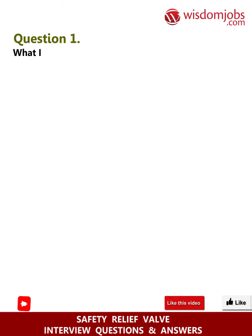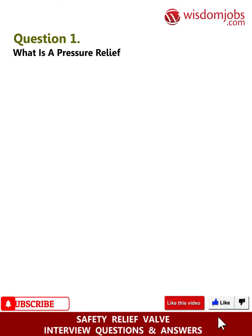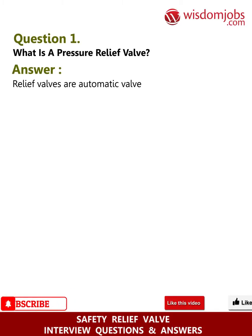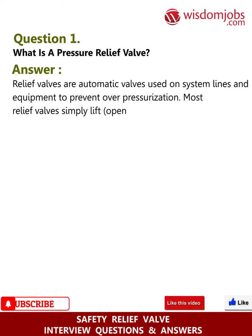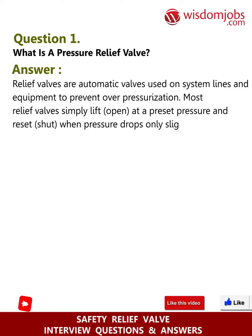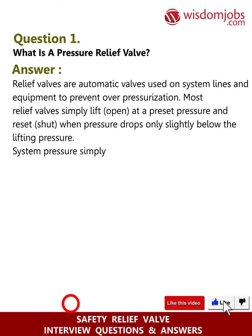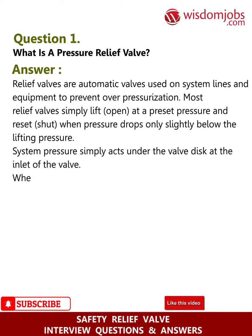Question 1: What is a pressure relief valve? Answer: Relief valves are automatic valves used on system lines and equipment to prevent over-pressurization. Most relief valves simply lift open at a preset pressure and reset shut when pressure drops only slightly below the lifting pressure. System pressure simply acts under the valve disc at the inlet of the valve.